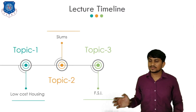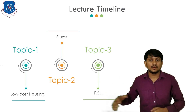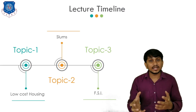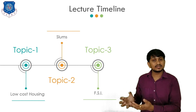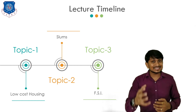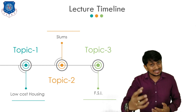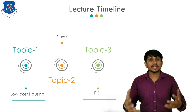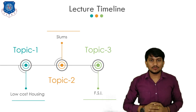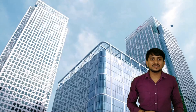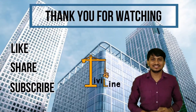That is all about FSI. I hope you all understand these three topics: what is low-cost housing, the selection criteria and techniques for low-cost housing construction, what is a slum, reasons for slum formation, how to prevent slum formation, what is FSI, and which areas can be excluded while calculating built-up area for FSI. That's all about the chapter Town Planning. See you soon in the next lecture. Thank you for watching. Don't forget to like, share, and subscribe to my YouTube channel CivilLine. Thank you.